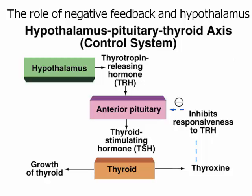All these hormones stay in balance because of negative feedback. The hypothalamus makes thyrotropin-releasing hormone (TRH), which tells the anterior pituitary to release TSH. TSH goes to the thyroid, which releases thyroxin. When thyroxin levels get too high, negative feedback shuts down the system. When thyroxin drops too low, the loop starts again — a perfect example of homeostasis.